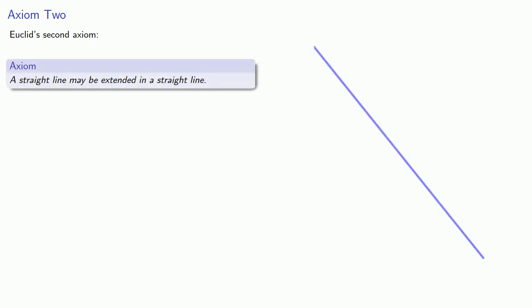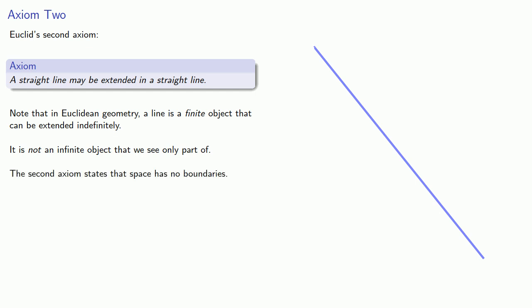How about Euclid's second axiom? The second axiom is that a straight line may be extended in a straight line. Now, this axiom points to an important but subtle feature of Euclidean geometry. If you can extend something, and the second axiom says that you can, it means that whatever it is can't be an infinitely large object. And so in Euclidean geometry, a line is a finite object that can be extended indefinitely, but it is not an infinite object that we only see part of. And we can look at the second axiom as stating that space has no boundaries.